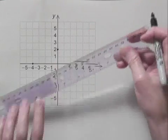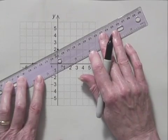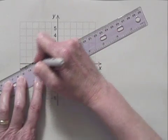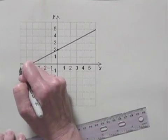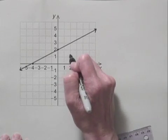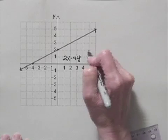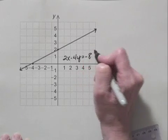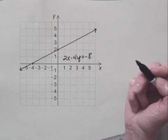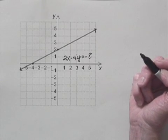We'll draw the line that contains those two points and label it with its equation, 2x minus 4y equals negative 8. Now let's find a third point as a check that we've graphed the equation correctly.